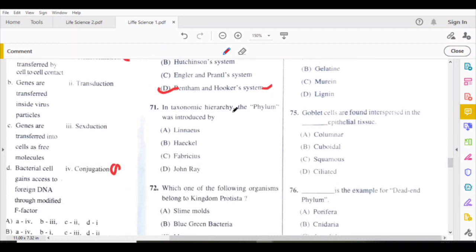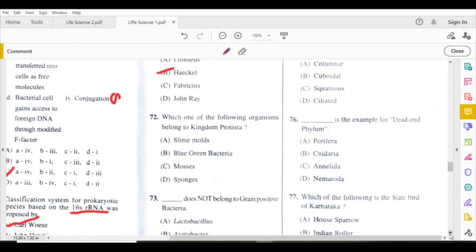In taxonomic hierarchy, the phylum was introduced by Ernst Haeckel. Which one of the following organisms belong to Kingdom Protista? Slime molds.